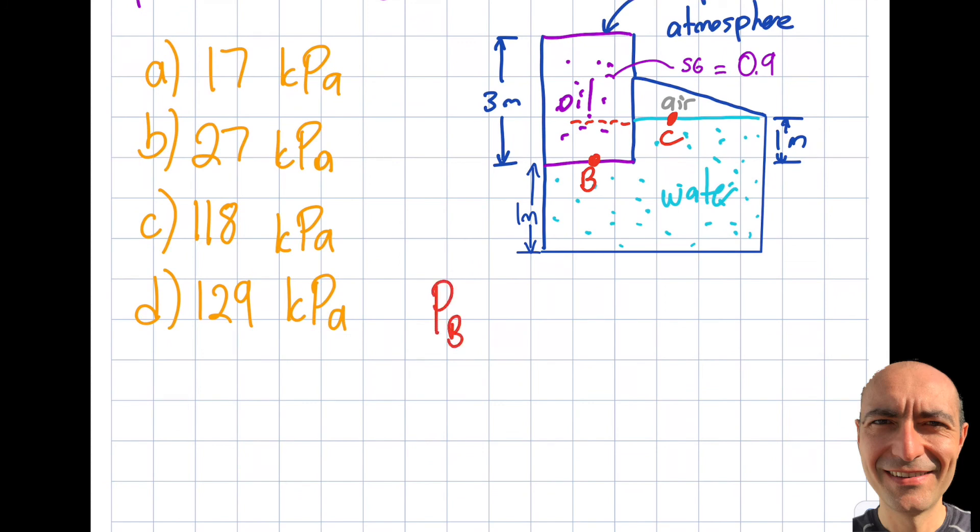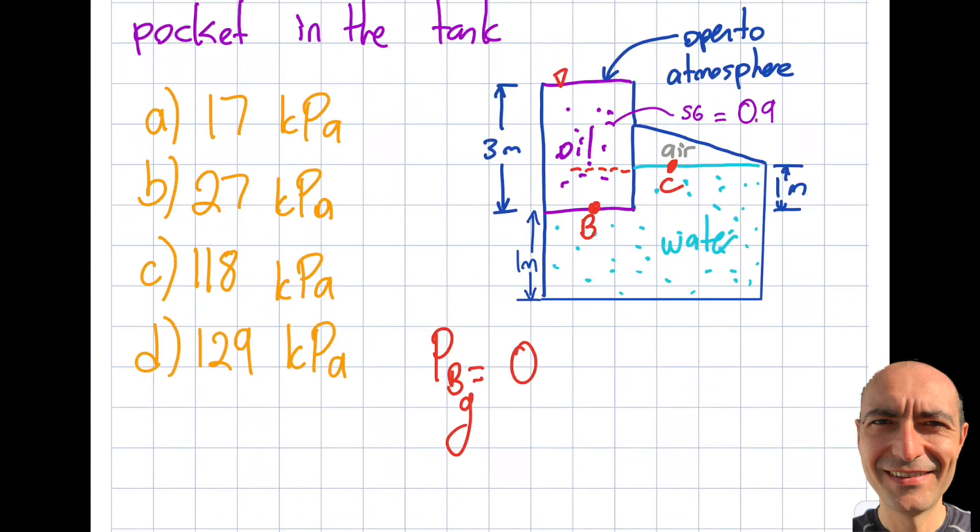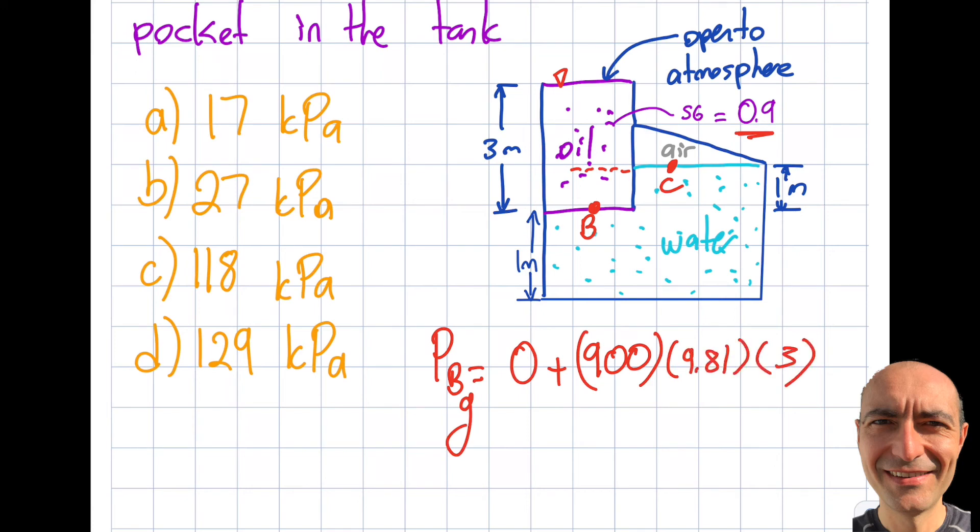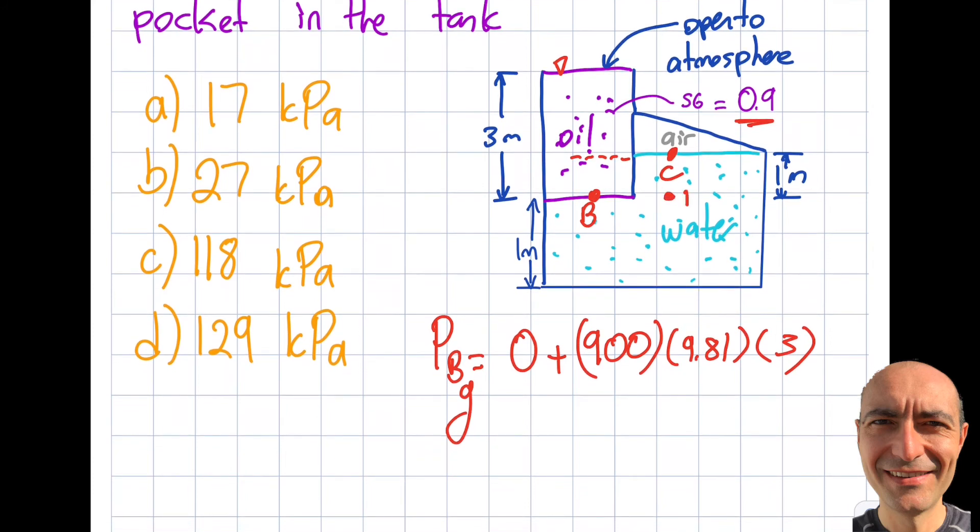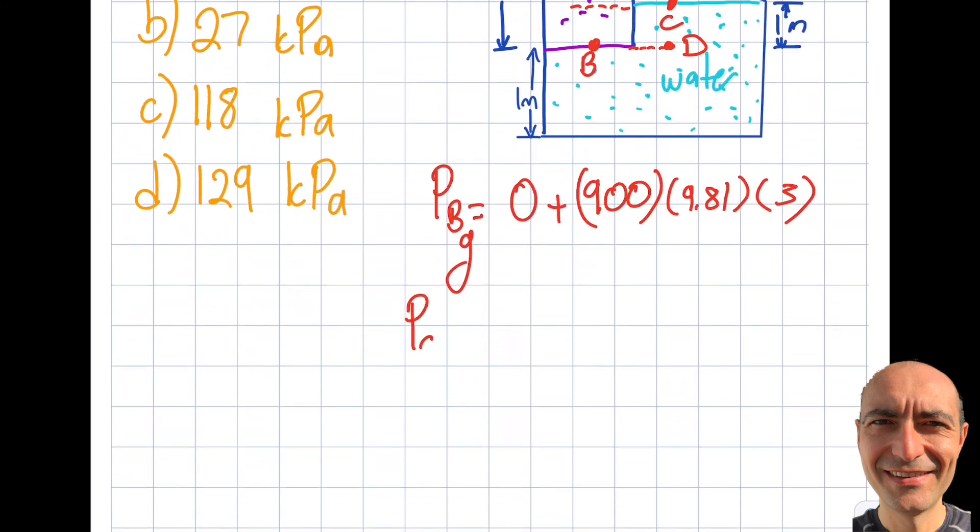PB using gauge terminology is 0 plus (because I'm moving down) the density - I did this in the previous question - 900 × 9.81 × the height I travel down, which is 3 meters. So I have point B. If I put this point over here as D, would you agree that PB = PD? Yes, because I'm at the same altitude. So the next step is to calculate PC_gauge, which equals PD_gauge, which equals PB_gauge.